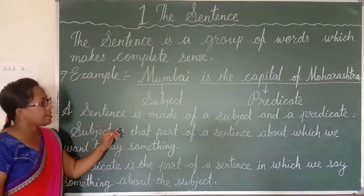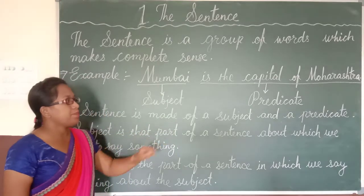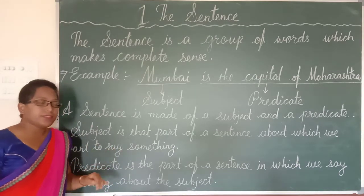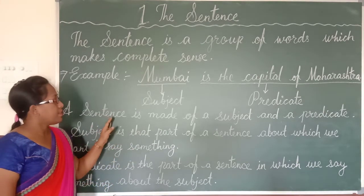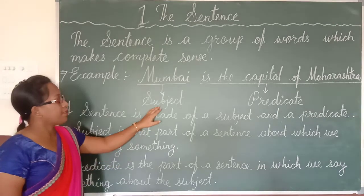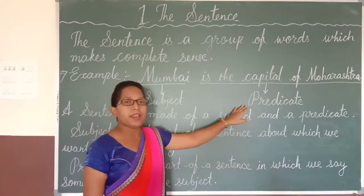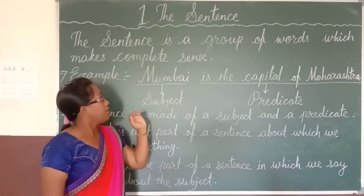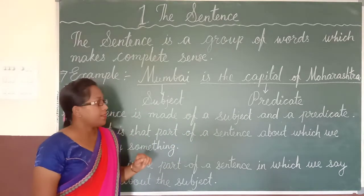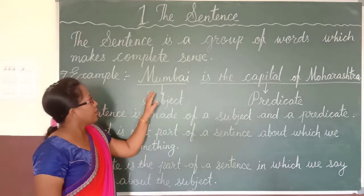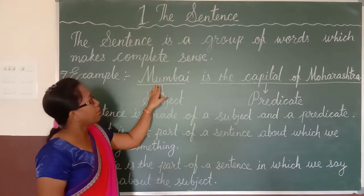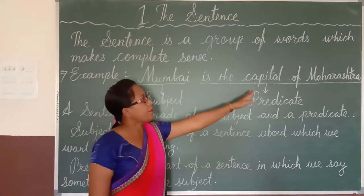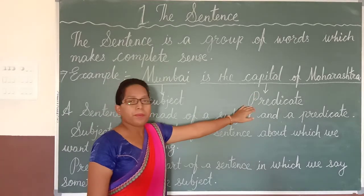This sentence is made of a subject and a predicate. A sentence is made of two things. We can see that one part is the subject and the rest is the predicate.